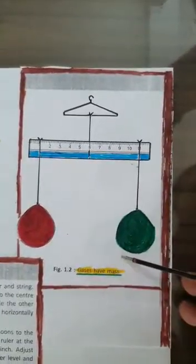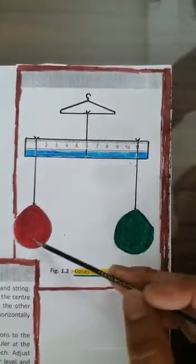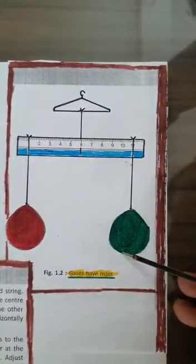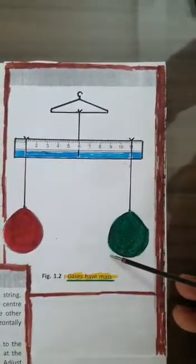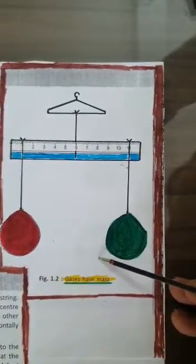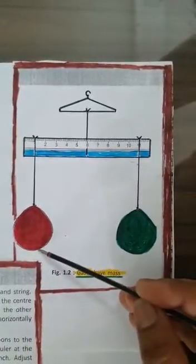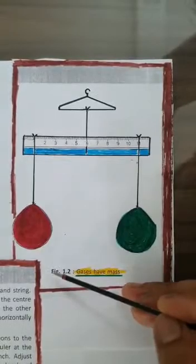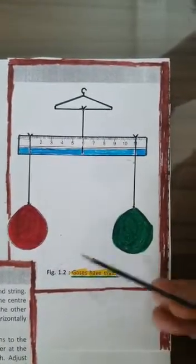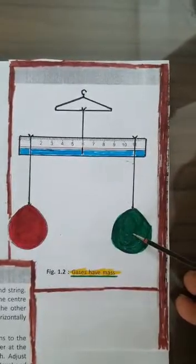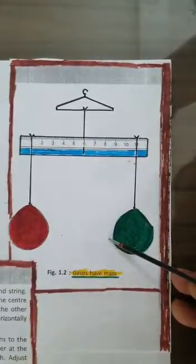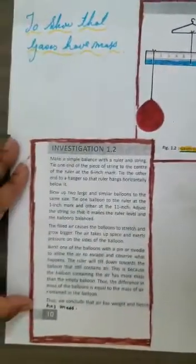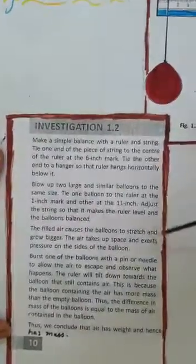Now burst one of the balloons with a pin or needle to allow the air to escape and observe. What happens? The ruler will tilt down towards the balloon that still contains air. This is because the balloon containing the air has more mass than the empty balloon. From this investigation we conclude that air has weight and hence has mass.